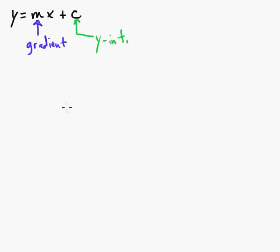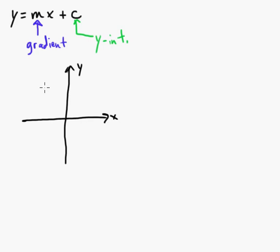We're going to write some equations in just a second. If you look at the gradient, the gradient is how steep things are. So let's say you had a coordinate plane with x and y. If you want a positive gradient, it would look something like this. And let's say it crosses at 2, so the y-intercept there is 2.